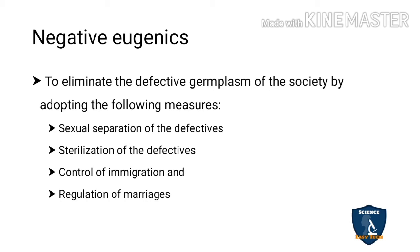While positive eugenics promotes desirable characters, negative eugenics aims to destroy defective or recessive characters. Measures include sexual separation of defective individuals — preventing them from marrying — and sterilization, where defective individuals are isolated in a separate place. This is similar to how, during the pandemic, a person with coronavirus is completely isolated.